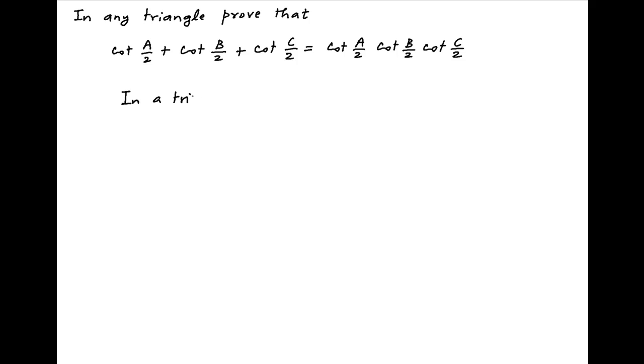We know that in any triangle ABC, the sum of the angles A, B, and C is equal to 180 degrees or pi.